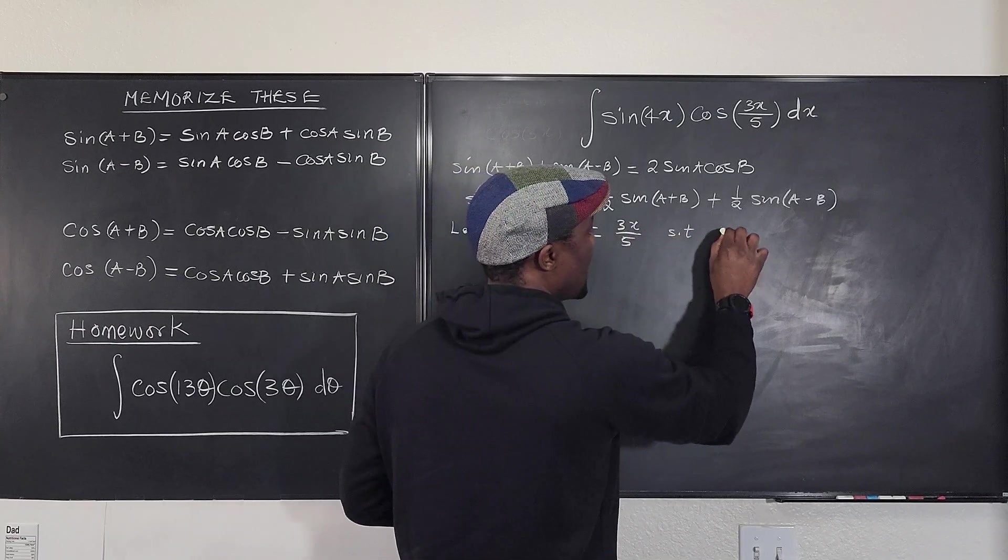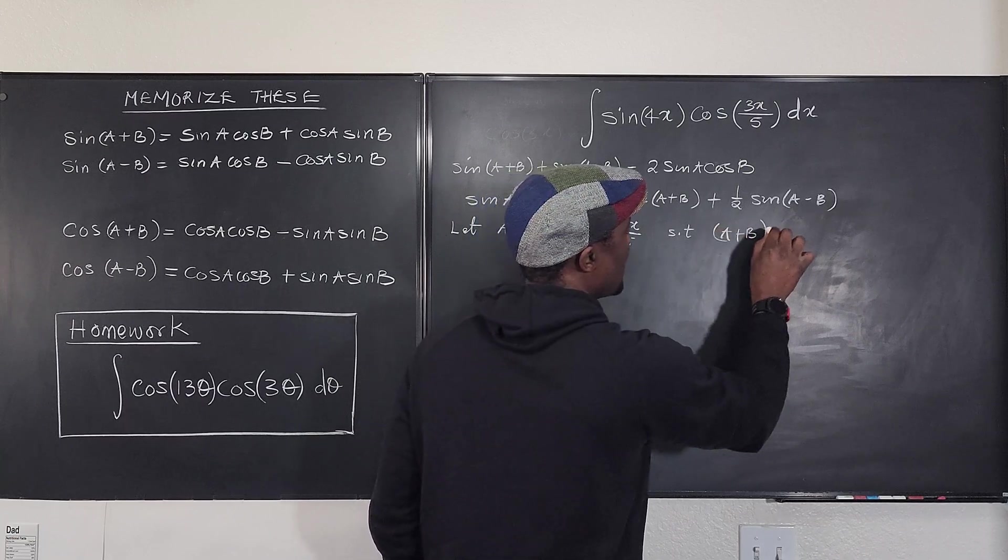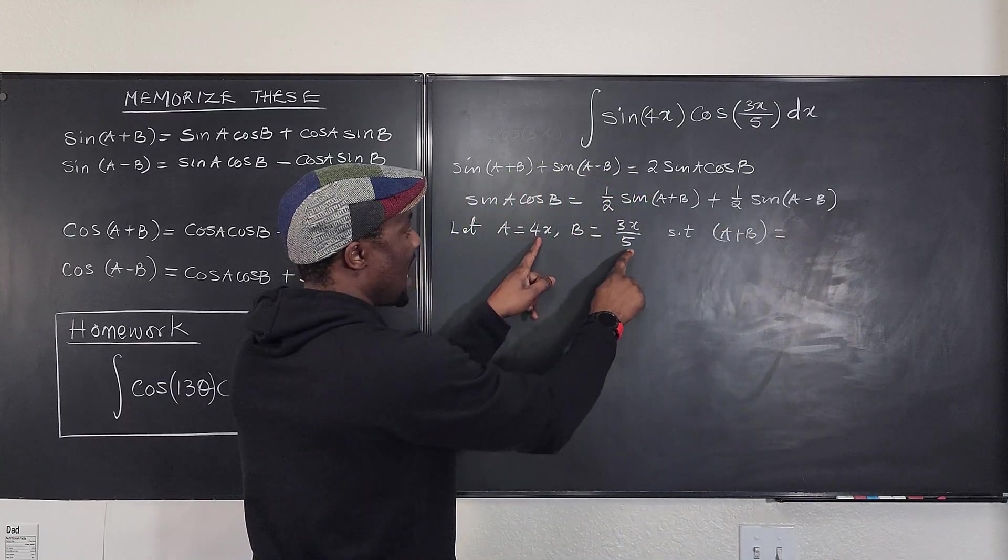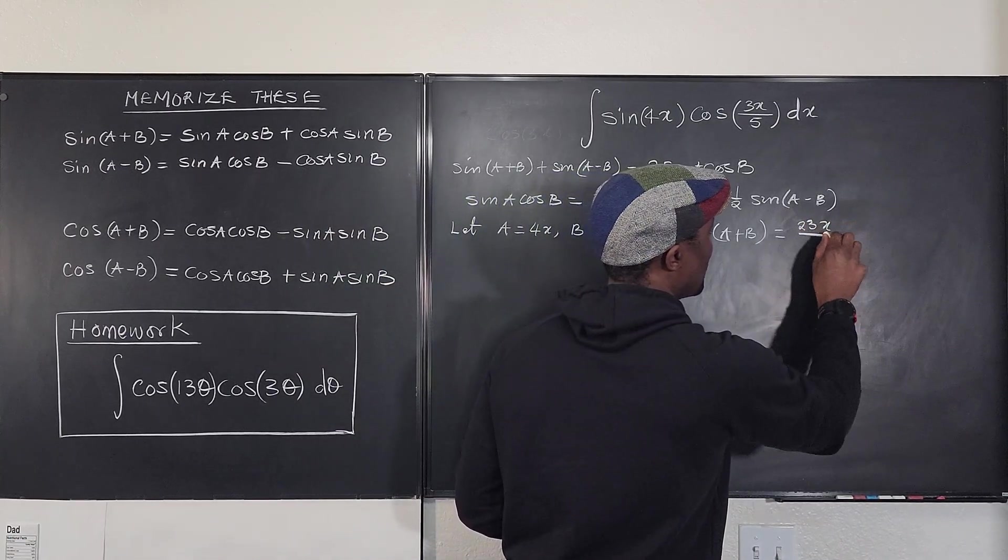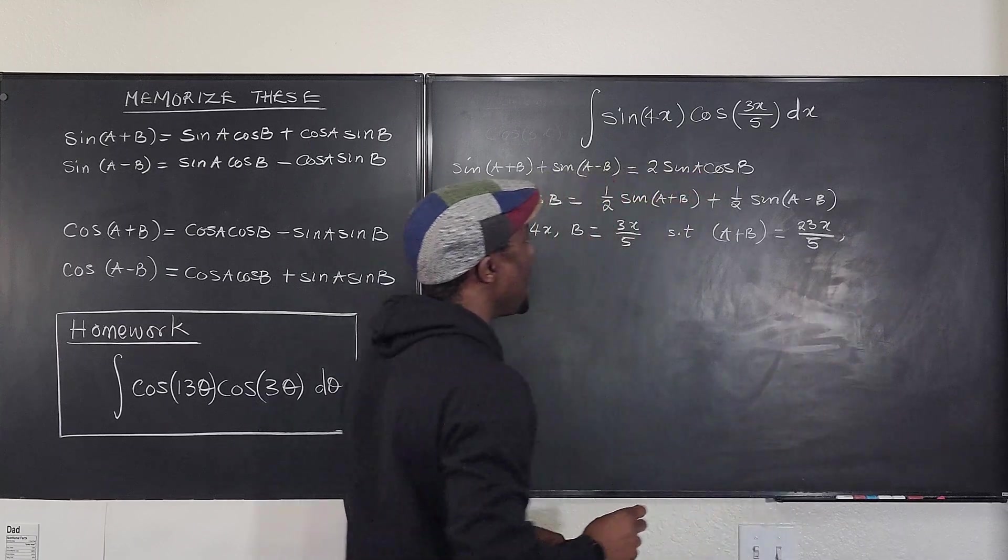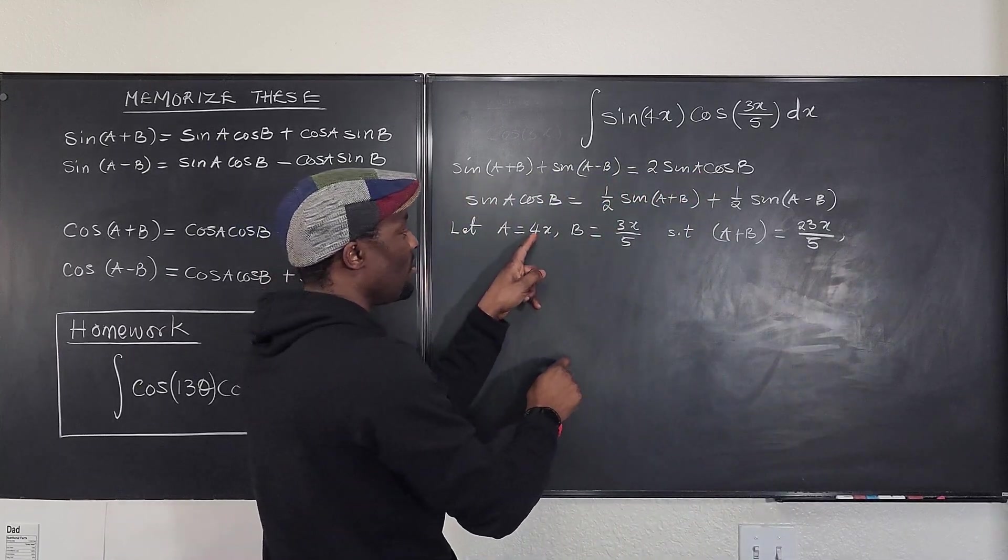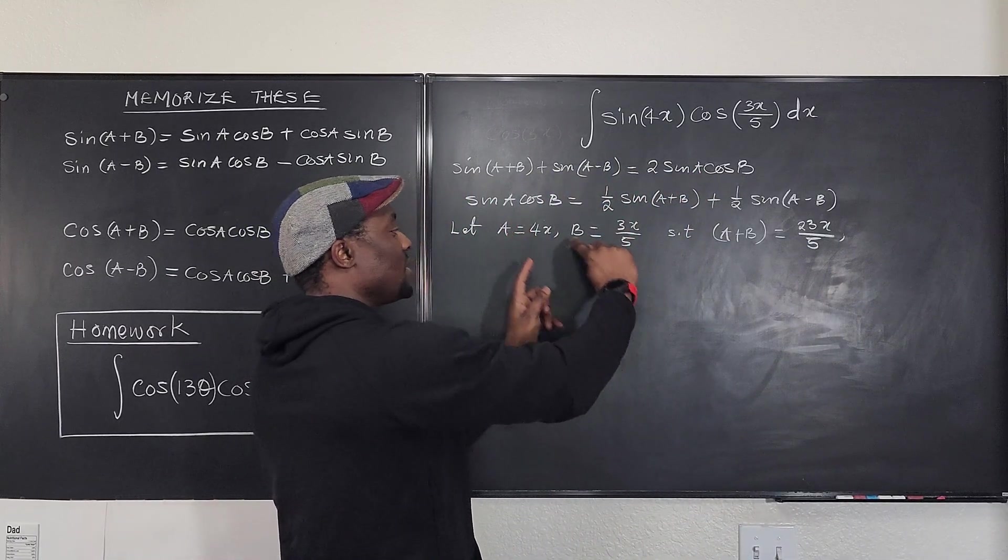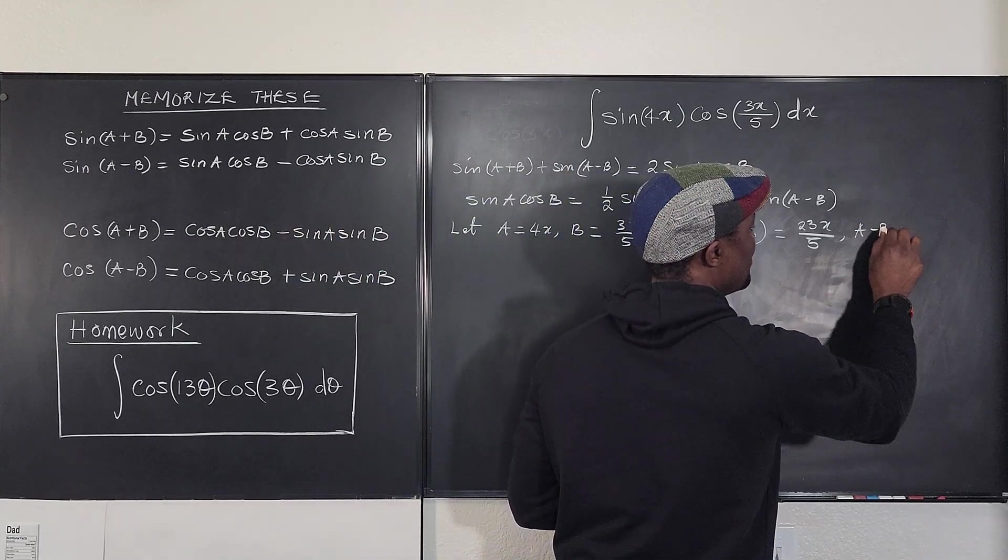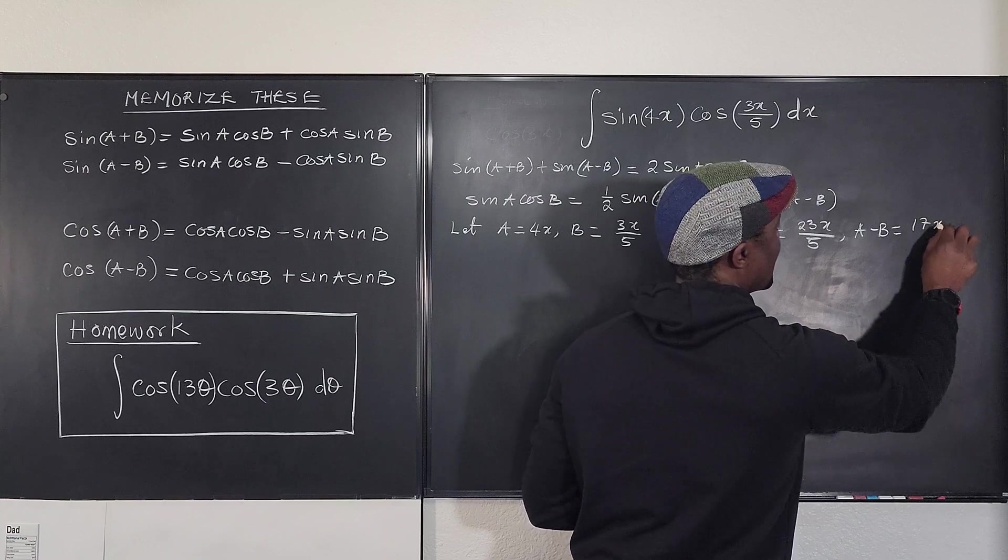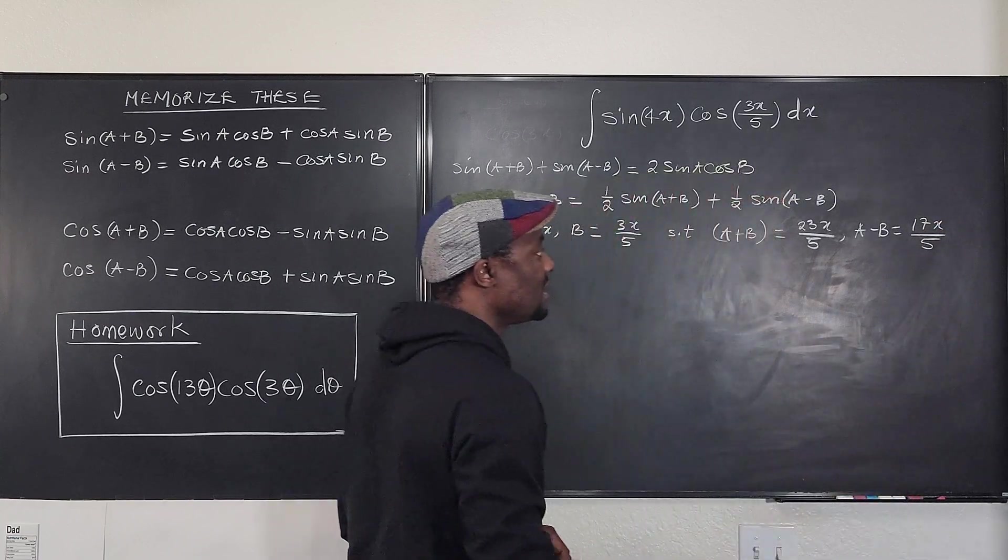What's A+B now? A+B is going to be the sum of this added to this, which is 23x/5. And what will A-B be? A-B will be 4 minus 3/5 of this, so that's going to be 20 minus 3, which is 17x. So A-B equals 17x/5, and that's it.